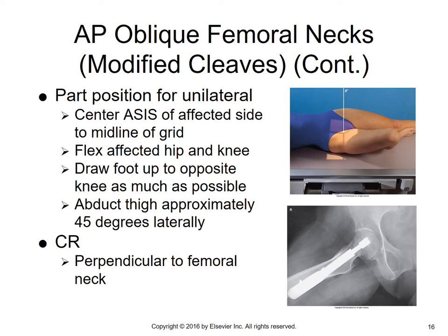Most of the time we do the modified Cleaves unilateral. Center the ASIS of the affected side to the midline of the grid, flex the affected hip and knee, draw the foot up to the opposite knee as much as possible, and abduct the thigh about 45 degrees laterally. The central ray is perpendicular to the femoral neck. Make sure not to rotate the pelvis — drop the leg out to the side; the femur will not be in contact with the table. If the patient has a pin, make sure you don't clip any of it on the radiograph.